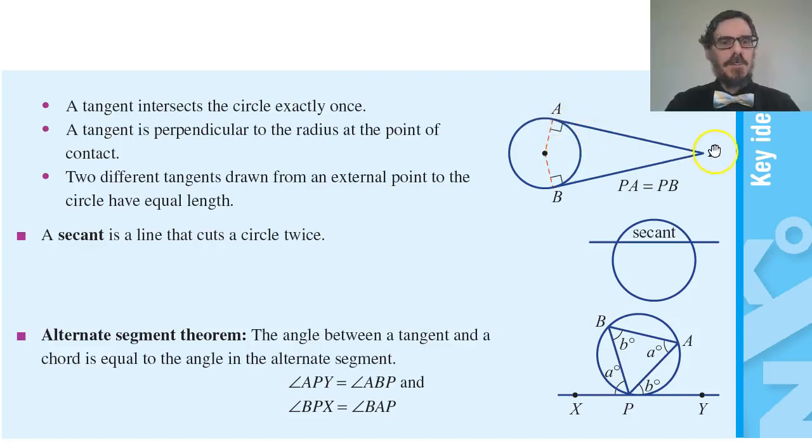Two different tangents drawn from one point to the circle have equal lengths. PA and PB are the same length. Again that's not called a theorem but it's something you could prove.